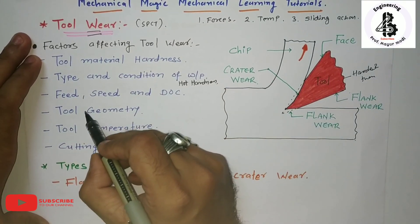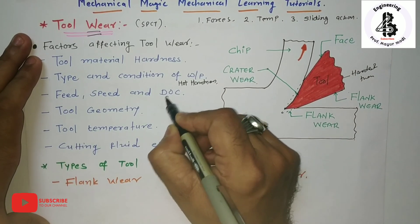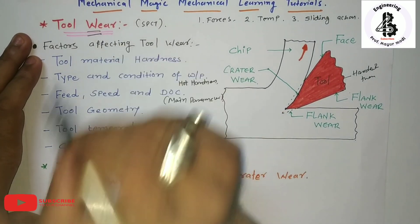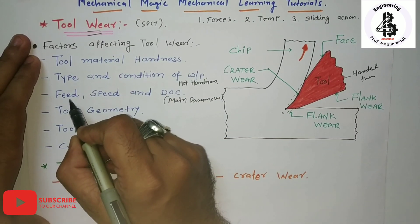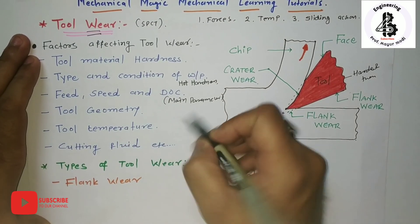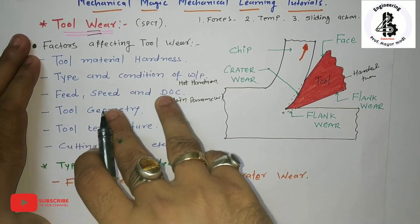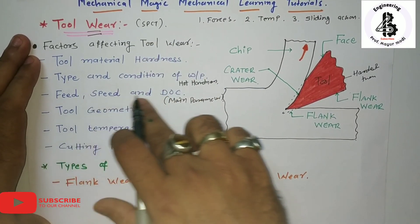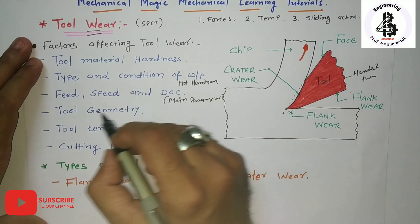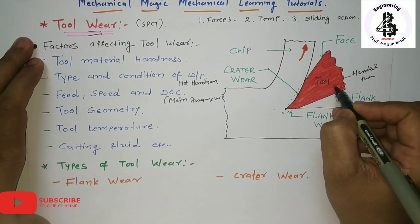The third important factor is feed, speed, and depth of cut. These three are the main parameters that increase tool wear. Increasing any one of these three will always increase tool wear. Increasing two of these three will cause rapid wear, and increasing all three - feed, speed, and depth of cut - will result in the highest tool wear. You should use optimum conditions for feed, speed, and depth of cut according to your workpiece and tool materials.